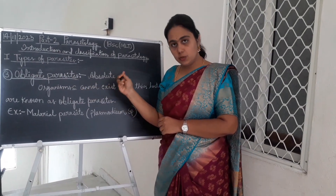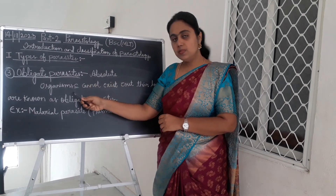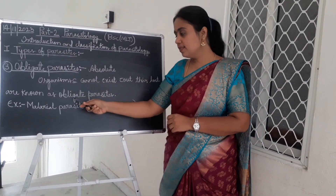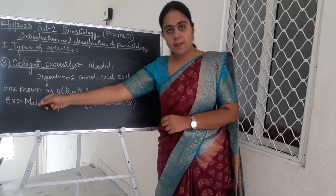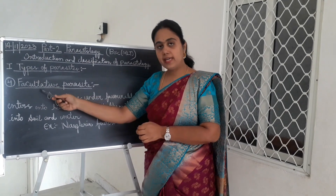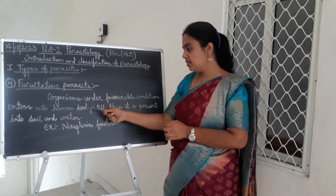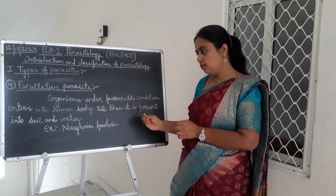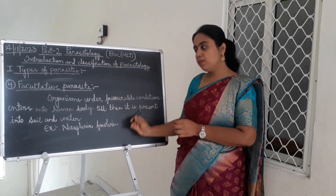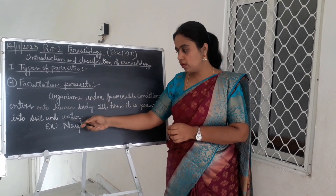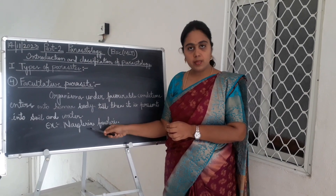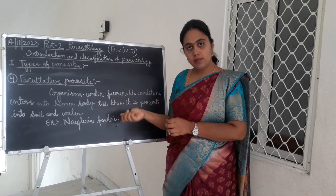Obligate parasite: it is an absolute parasite. Organisms which cannot exist without their host are known as obligate parasites. Example is the malarial parasite Plasmodium species. Facultative parasite: organisms that under favorable conditions enter into the human body — till then they are present in soil and water. Example is Naegleria fowleri, which is a free-living parasite but under favorable conditions enters into the human body.